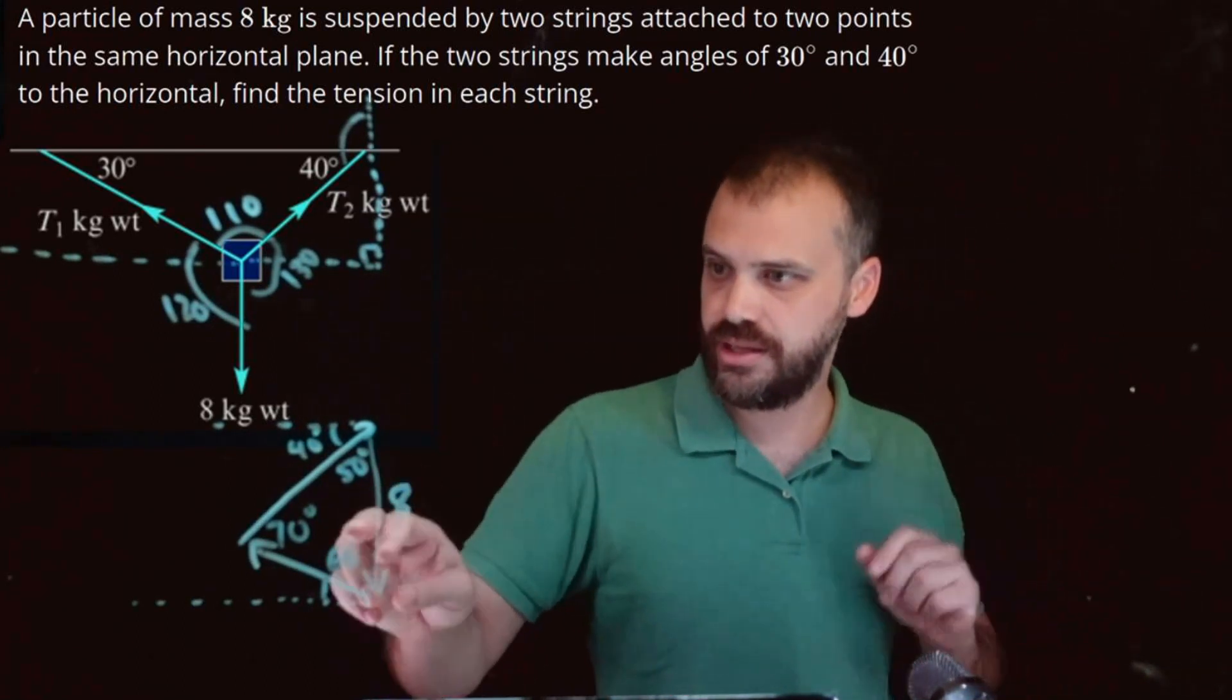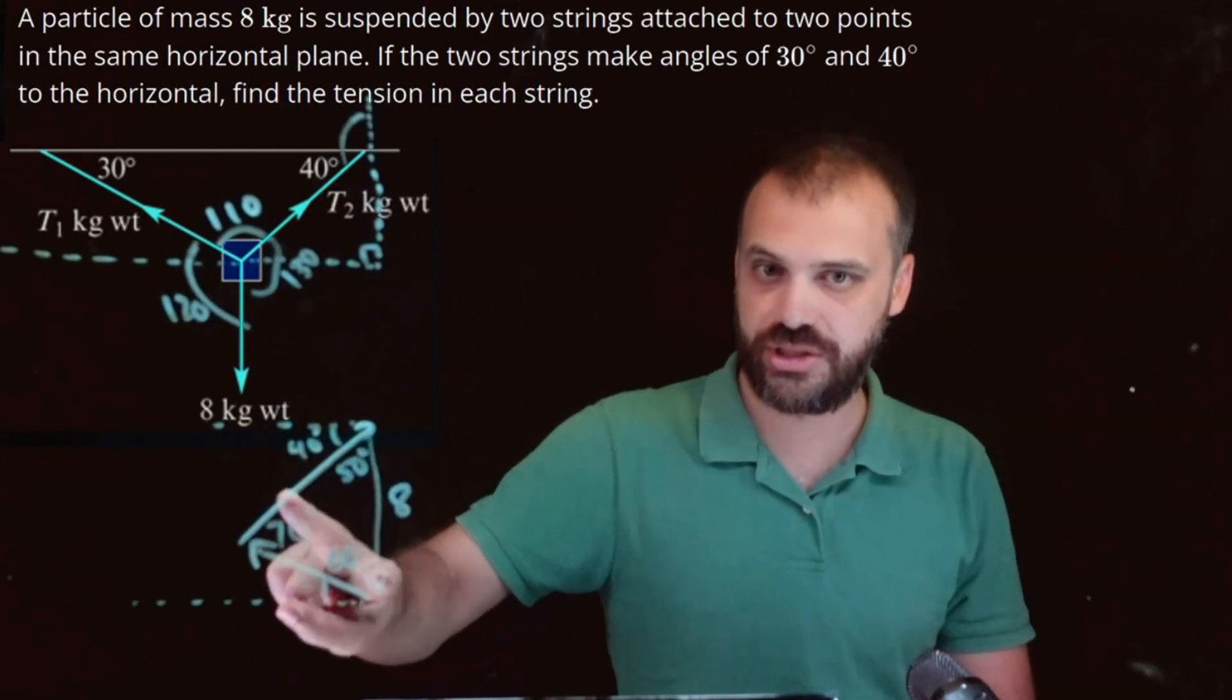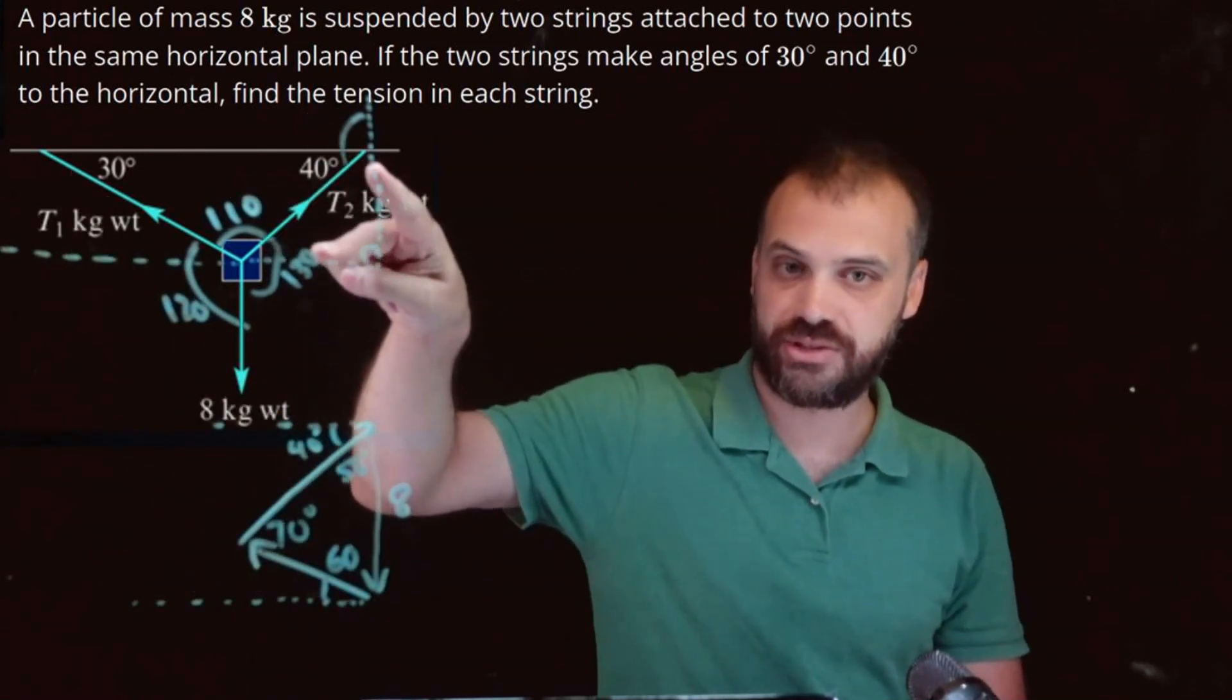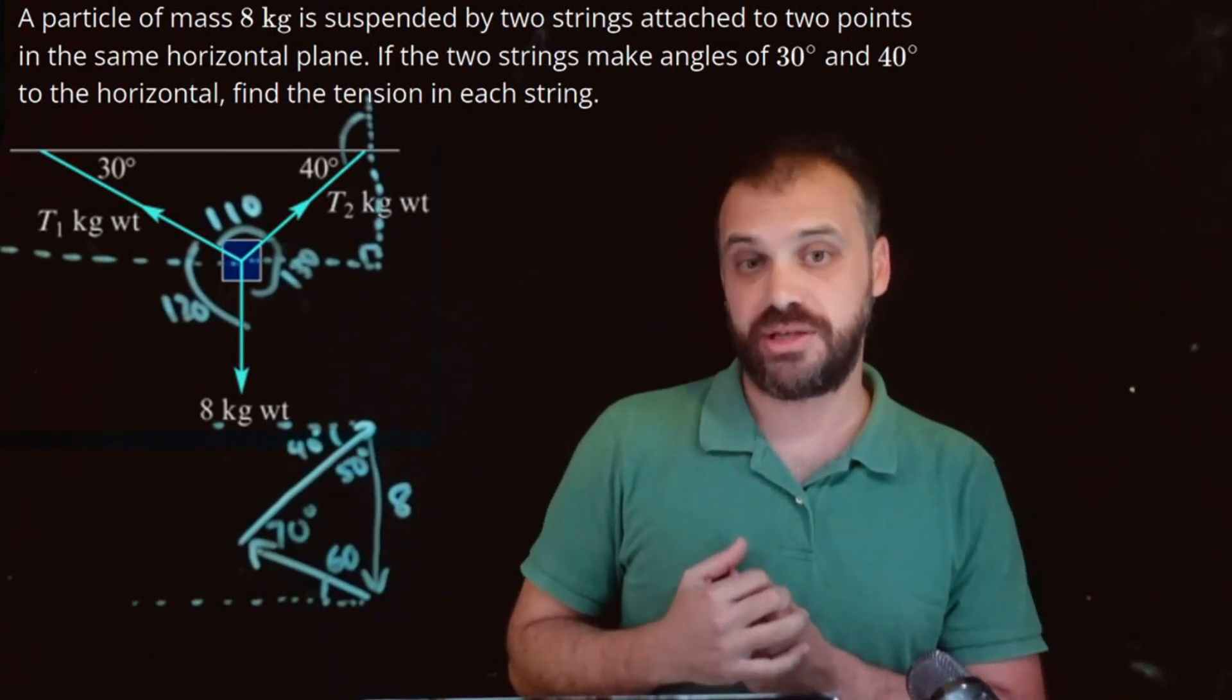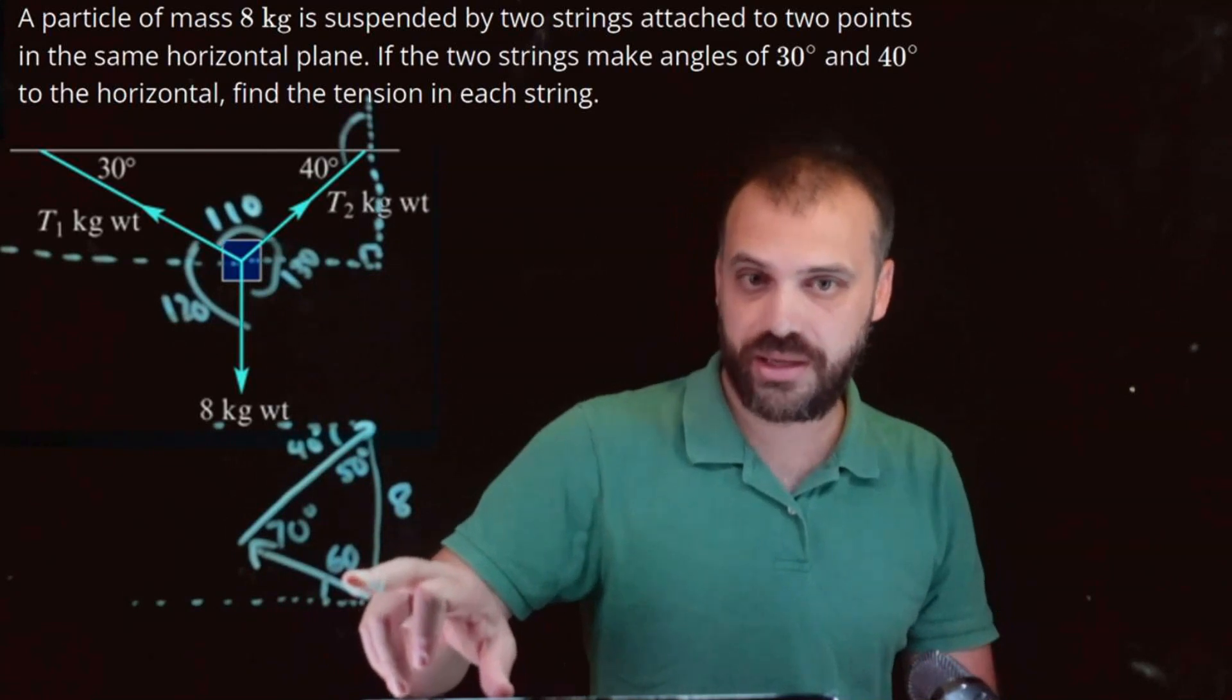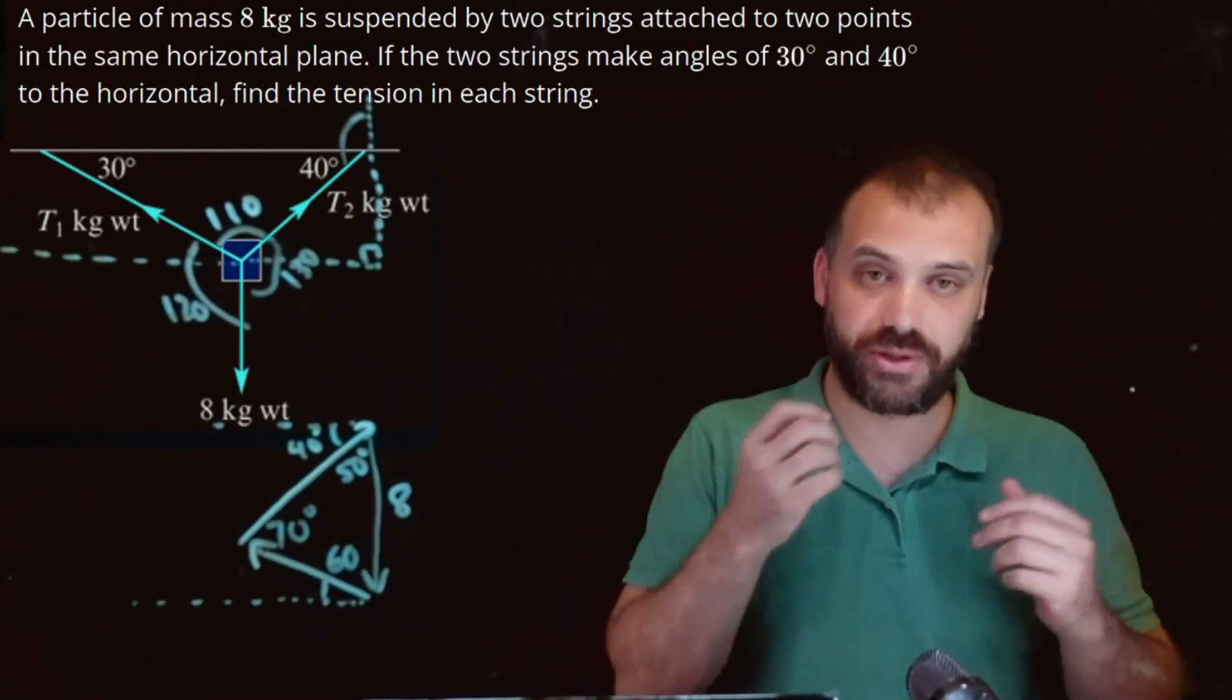So here I have three internal angles of a triangle. I have one length. They're asking me to find the tension in each string. This is one of the strings. This string is that string. That string is that string. And I calculate those tensions. It looks like I'm going to use the sine rule. Sine A over A equals sine B over B. Something like that.